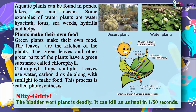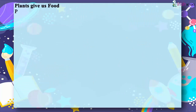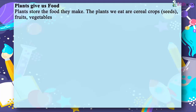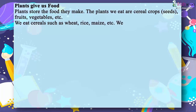Plants give us food. Plants store the food they make. The plants we eat include cereal crops, seeds, fruits, vegetables, etc. We eat cereals such as wheat, rice, maize. We eat pulses such as rajma, bean, etc.